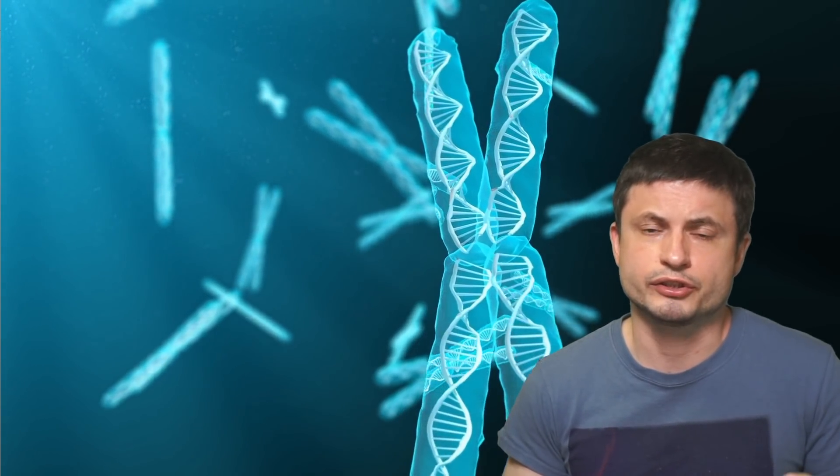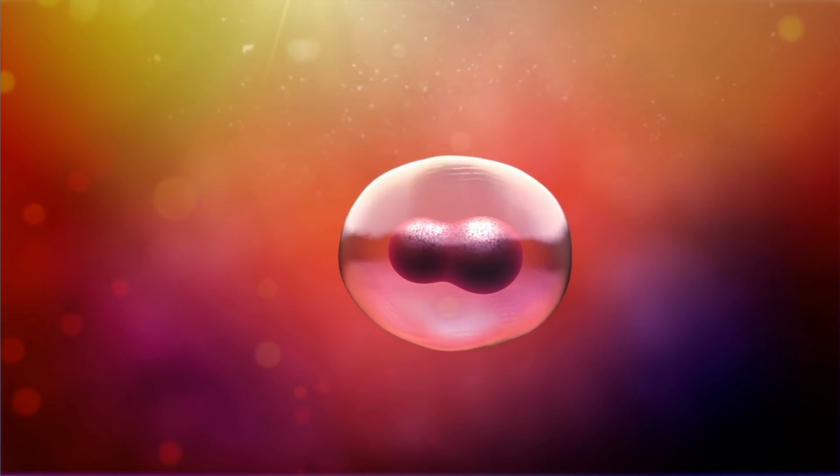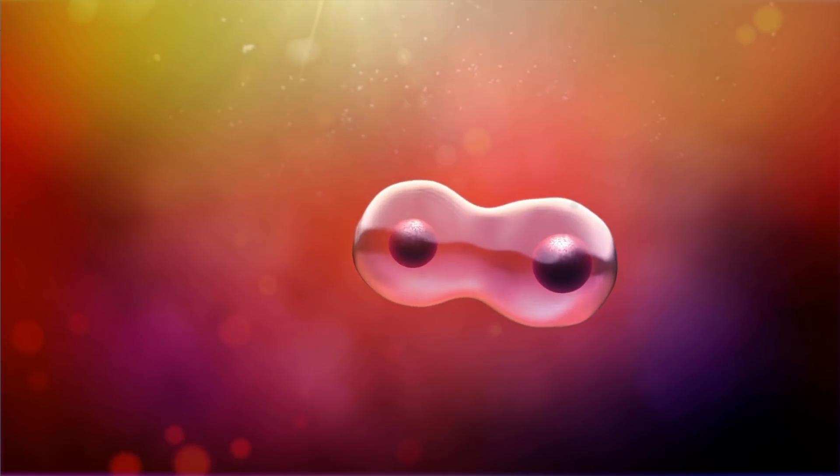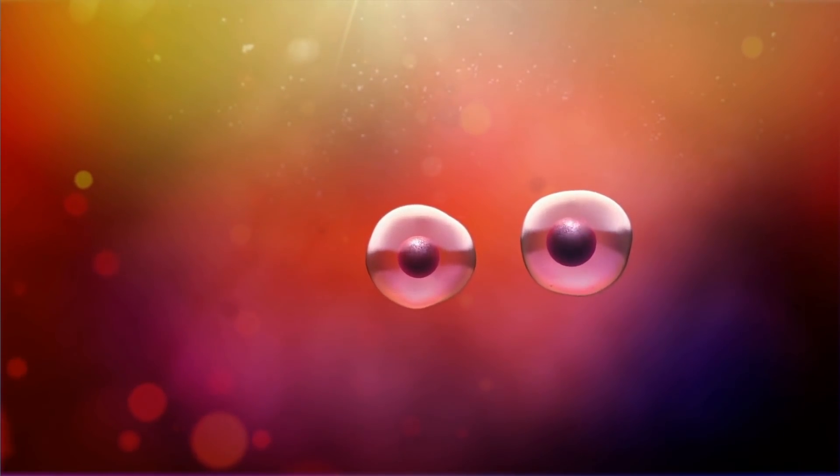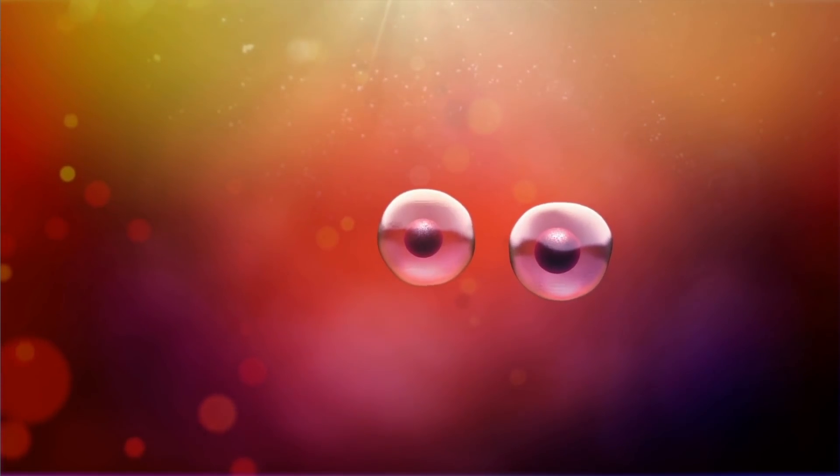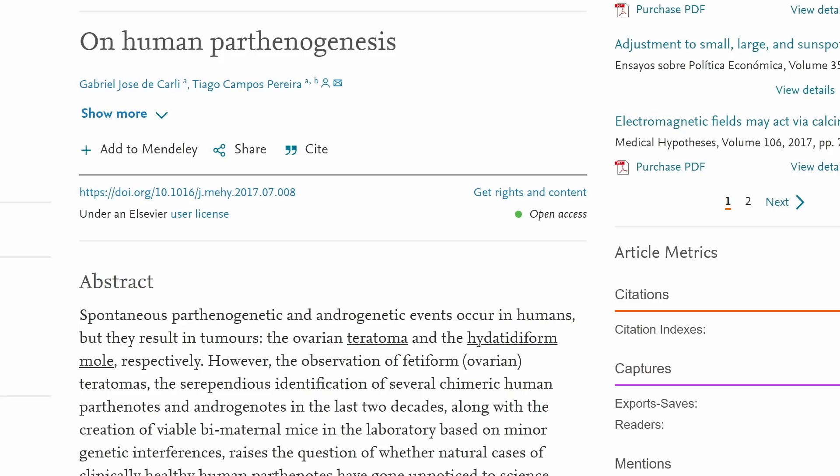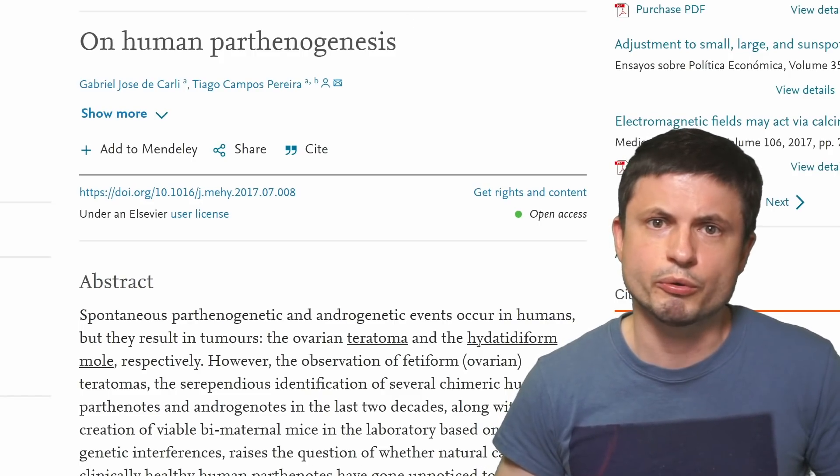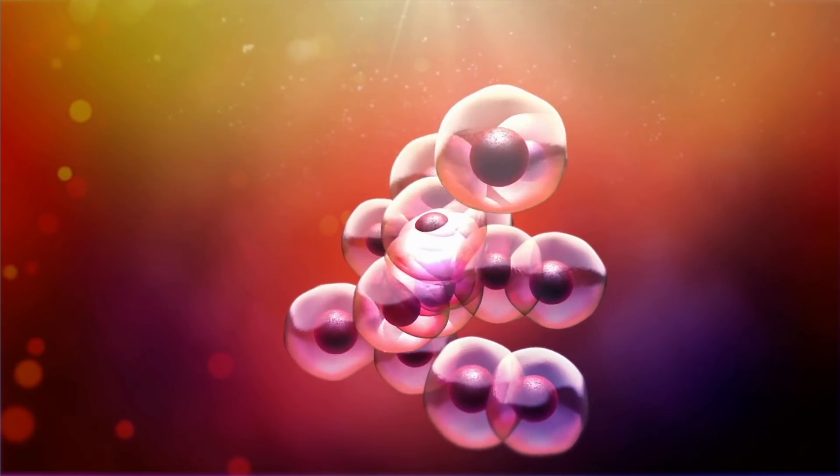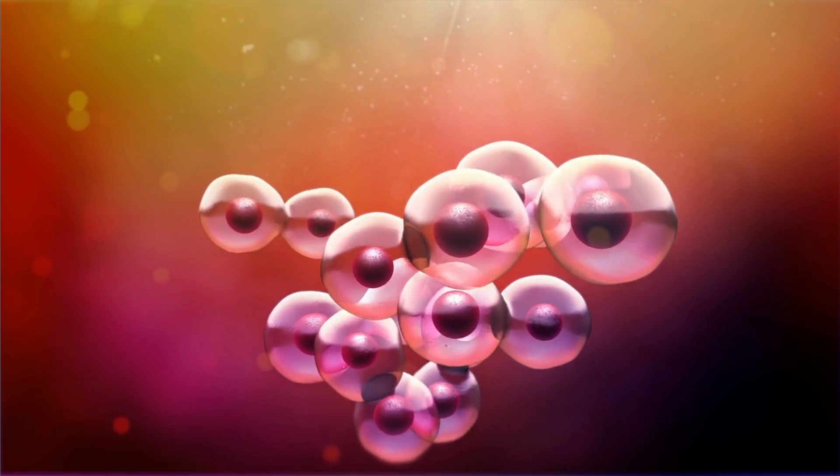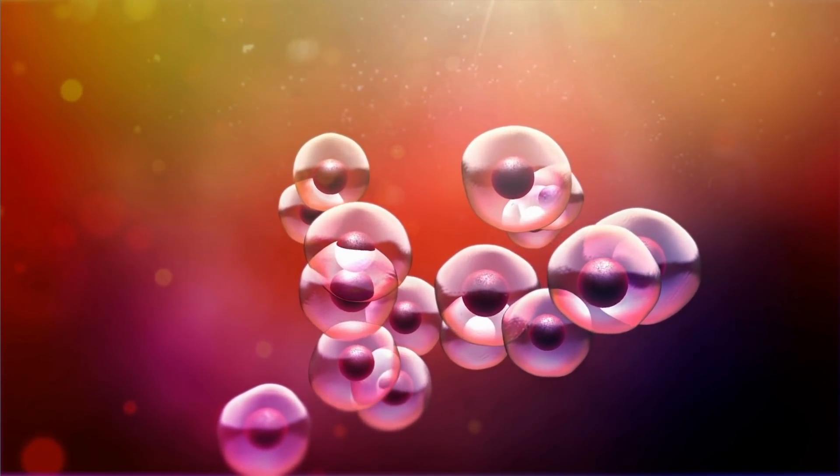Moreover, when parthenogenesis starts to accidentally occur in humans, or when the cell starts to divide by itself without the presence of paternal genes, it normally results in a relatively serious issue. It results in a type of growth known as teratoma and can actually create some serious problems for the mother because it becomes a very dangerous growth.